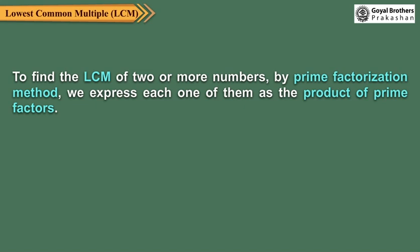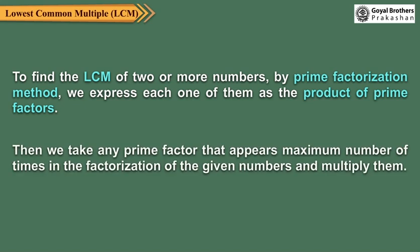To find the LCM of 2 or more numbers by prime factorization method, we express each one of them as the product of the prime factors. Then, we take any prime factor that appears maximum number of times in the factorization of the given numbers and multiply them.